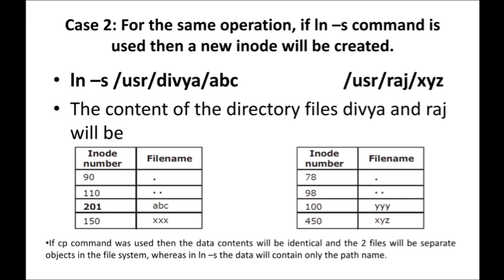This is the difference between hard link and symbolic link — a symbolic link contains only the path name of the original file. If the 'cp' command was used, the data contents would be identical and the two files would be separate objects in the file system. But if you use 'ln -s', the data will contain only the path name — the contents won't be duplicated. If you want to open the contents of abc, you can directly use the path /user/divya/abc, or you can open xyz and click the link present in xyz to open abc.